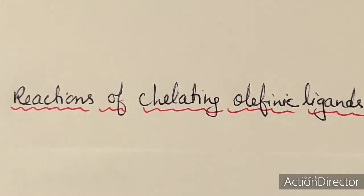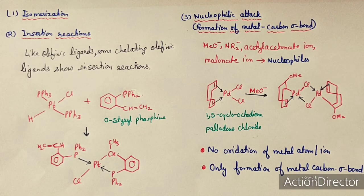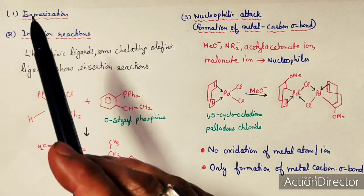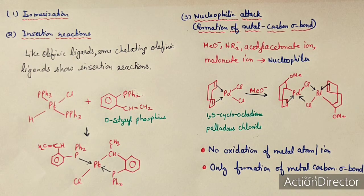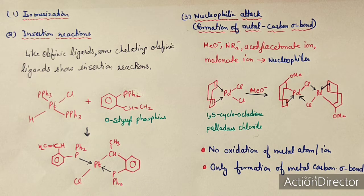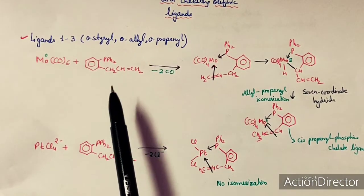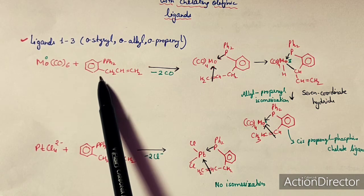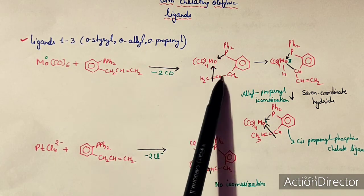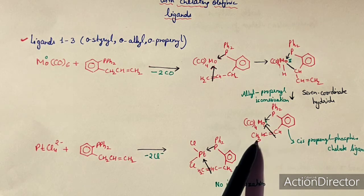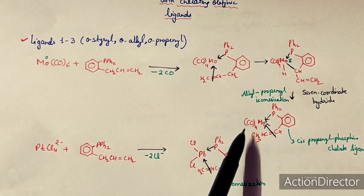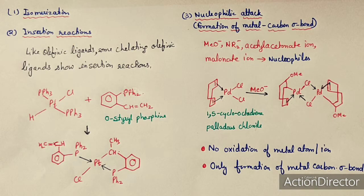Now we will discuss reactions of chelating olefinic ligands. The first is isomerization, already seen in the molybdenum complex: when the complex is formed through the ortho-allyl group, that allyl group isomerizes to the propenyl group. This is one key property of olefinic chelating ligands.